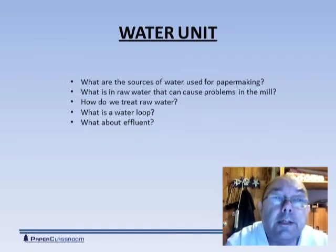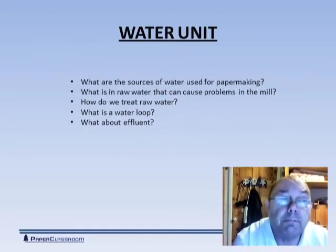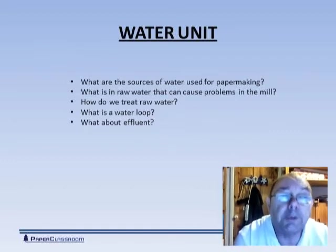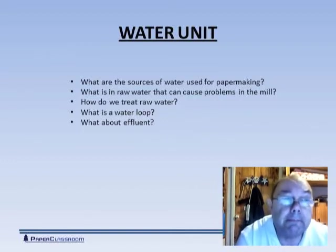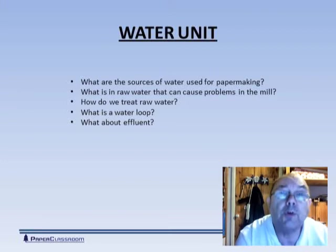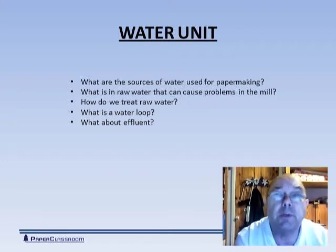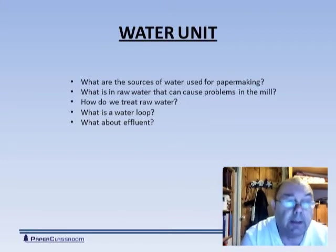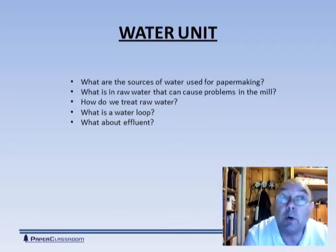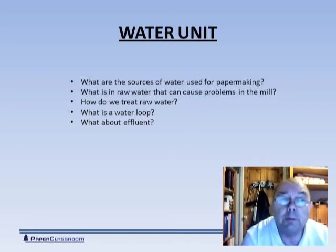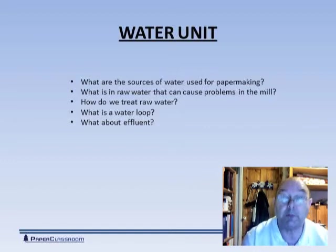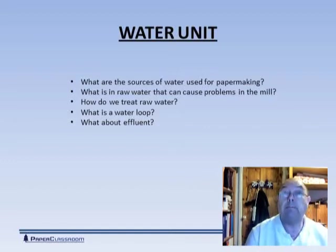In this unit we're going to answer these five questions. What are the sources of water that are used in papermaking? And how is this raw water contaminated? What problems can it cause in the mill? And how do we treat the water to remove the contamination? What's a water loop? And what about the effluent?